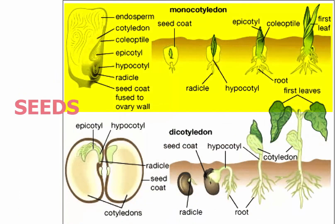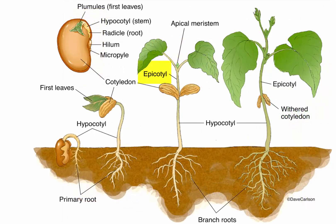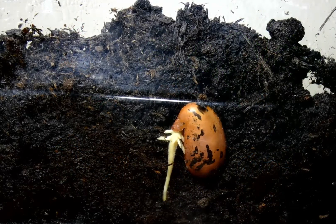Monocot seeds as in grasses have only one cotyledon. The tiny embryo plantlet with undeveloped leaves and a meristem at the upper end of the embryo shoot is called the plumule. The cotyledons are attached just below the plumule. The very short part of the stem above the cotyledons is called the epicotyl. The stem below the attachment point is the hypocotyl. In an embryo, it is often difficult to tell where the stem ends and the root begins, but the tip that will develop into a root is called the radicle.